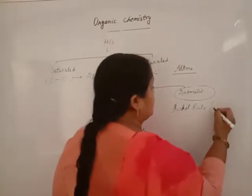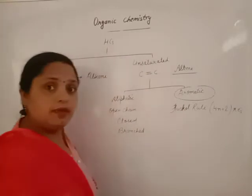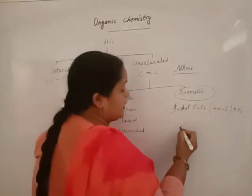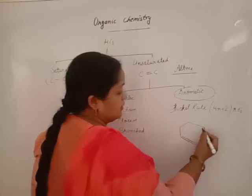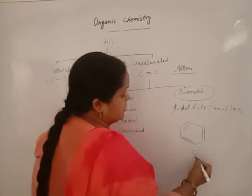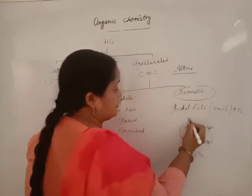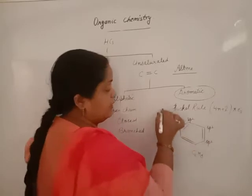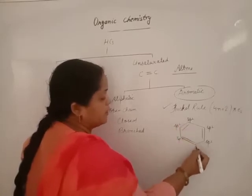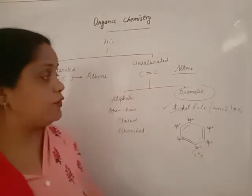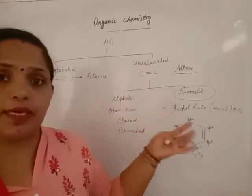Aromatic hydrocarbons are those which follow Huckel's rule, which you studied in class 11 — the 4N+2 pi electrons rule. Under Huckel's rule, we have a very stable compound known as benzene. Its formula is C6H6. Each carbon is sp2 hybridized, it has planar geometry, follows conjugation, and most importantly follows Huckel's rule. Any compound satisfying these conditions is aromatic; otherwise, it is aliphatic.